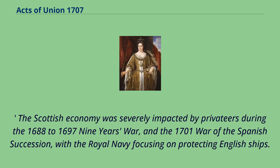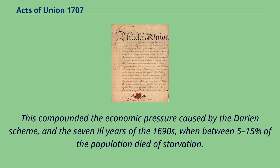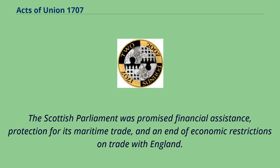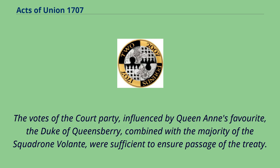The Scottish economy was severely impacted by privateers during the 1688–1697 Nine Years' War and the 1701 War of the Spanish Succession, with the Royal Navy focusing on protecting English ships. This compounded the economic pressure caused by the Darien Scheme and the Seven Ill Years of the 1690s, when between 5–15% of the population died of starvation. The Scottish Parliament was promised financial assistance, protection for its maritime trade, and an end of economic restrictions on trade with England. The votes of the court party, influenced by Queen Anne's favourite the Duke of Queensbury, combined with the majority of the squadrone volante, were sufficient to ensure passage of the treaty.